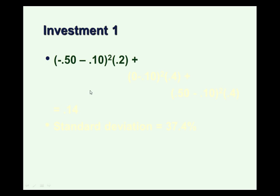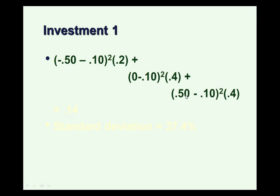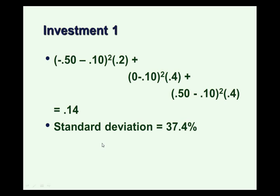For investment 1, the first possible return was negative 50%. We subtract the expected value to get the deviation, square it, and weight it by its probability of 0.2. The second possibility was a 0% return — again subtract the expected return, square the distance, weight by probability. The final outcome was a 50% return — subtract the expected return, square it, weight by the probability. Doing this arithmetic gives us a variance of 0.14, and taking the square root gives a standard deviation of 0.374, or 37.4%.